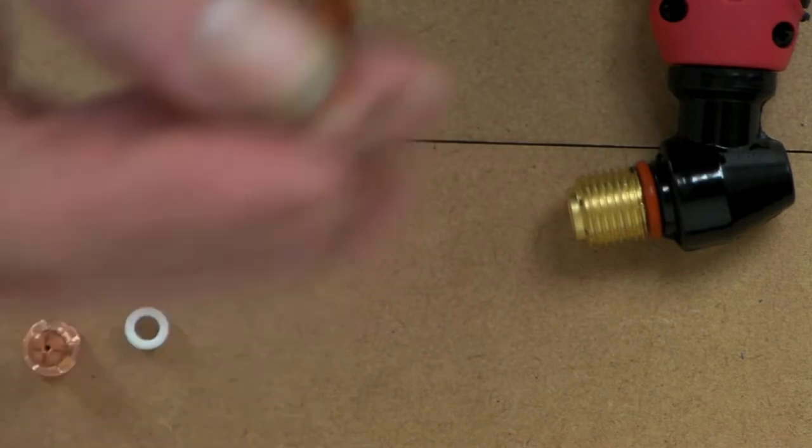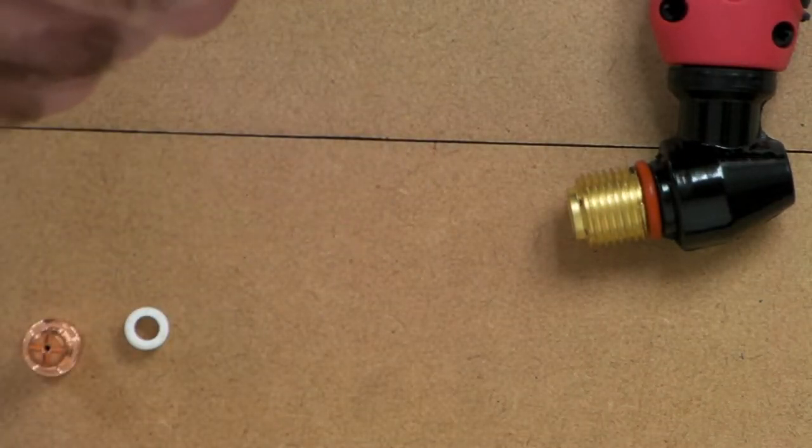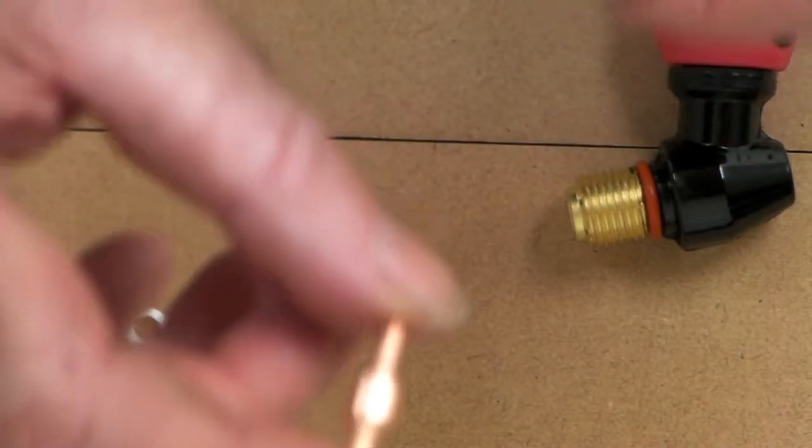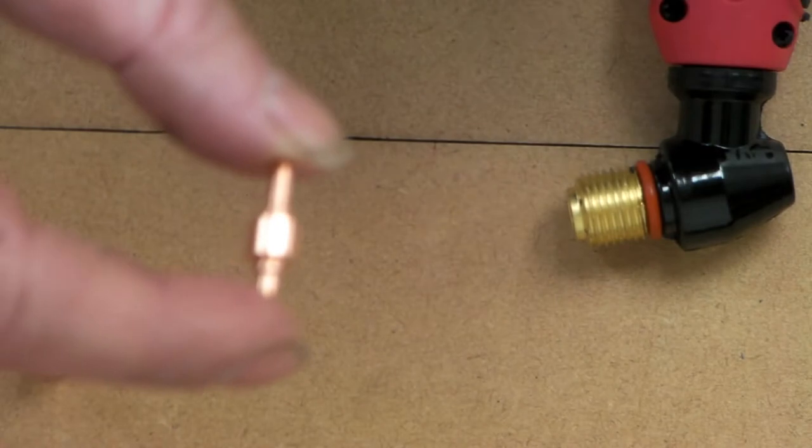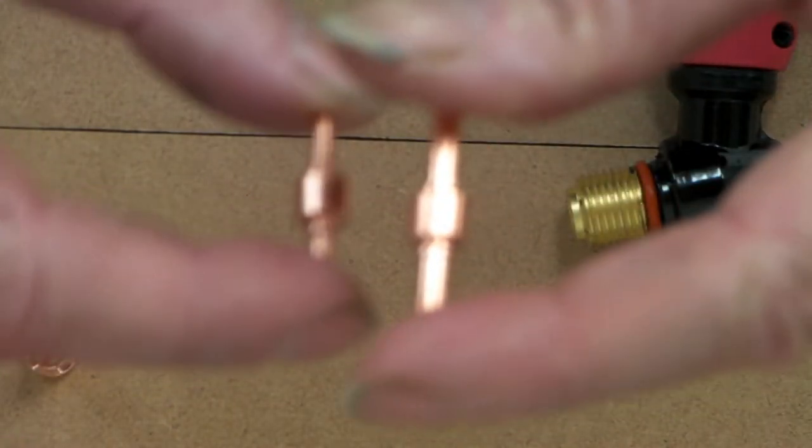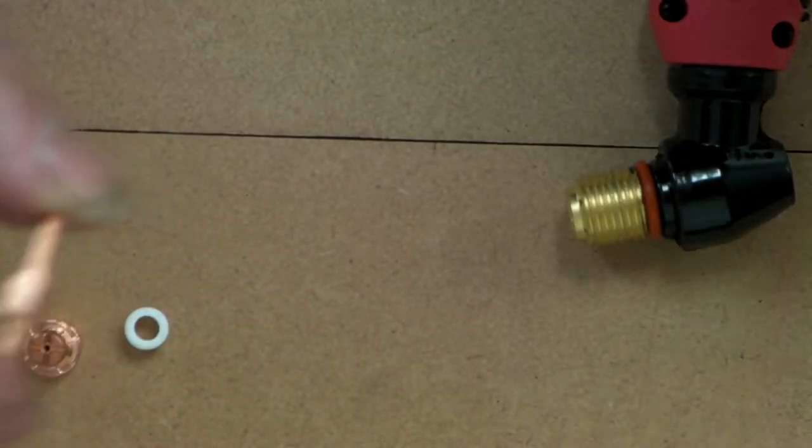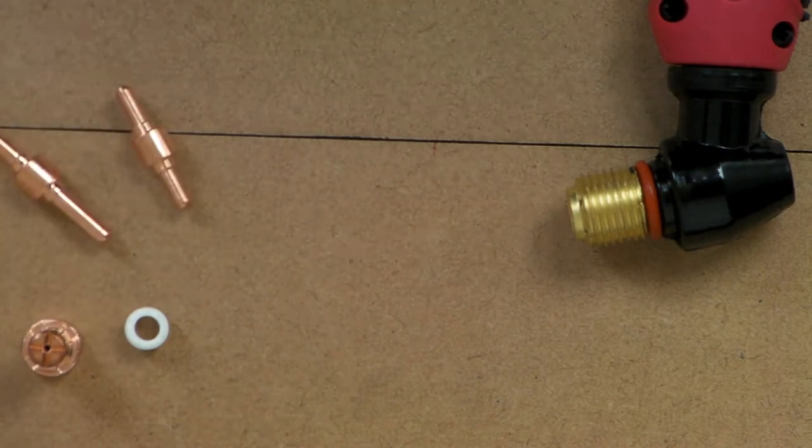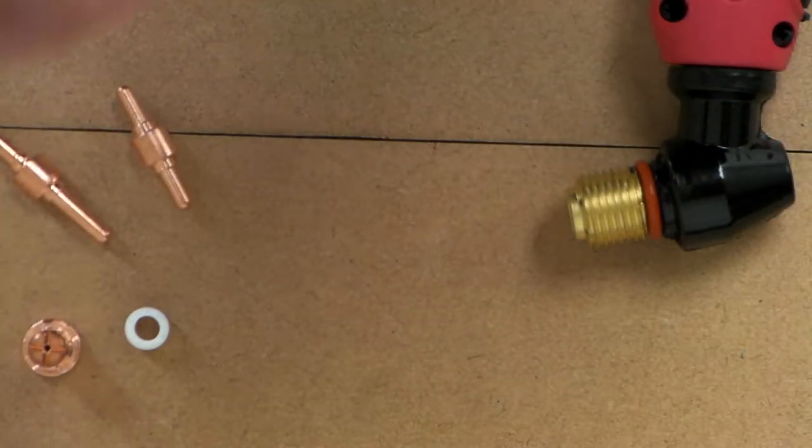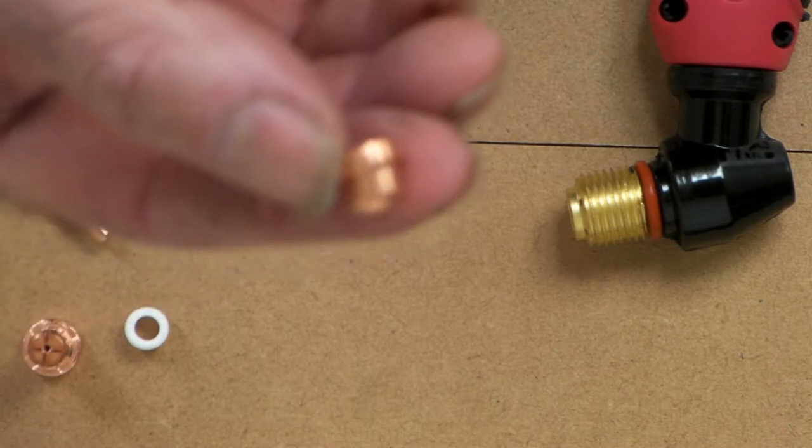We'll put that in there. We also have a shorter electrode here. Here's a short one and here's a long one—you can see the difference there. If you're using the shorter electrode, you'll need a shorter tip, which is this tip here.